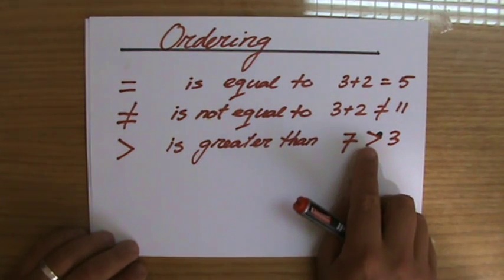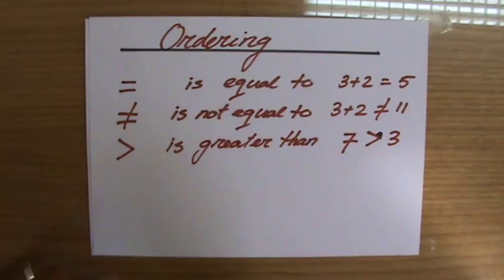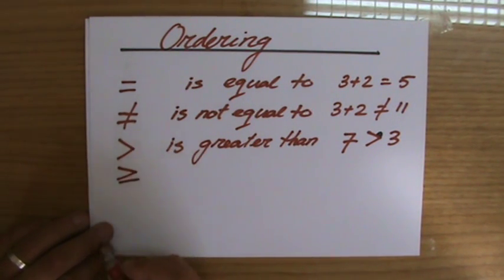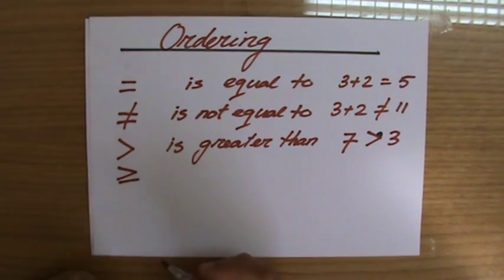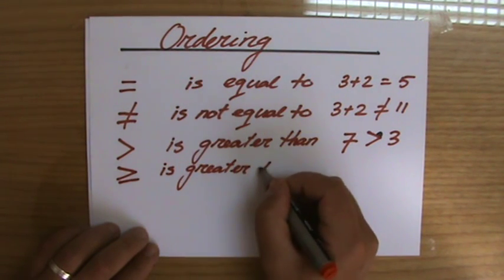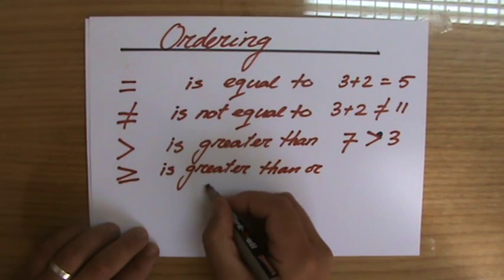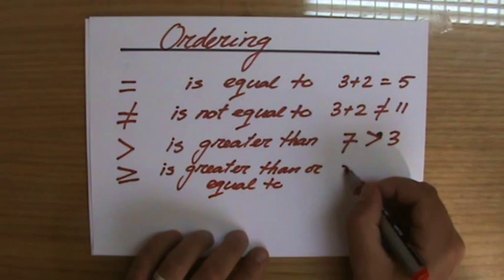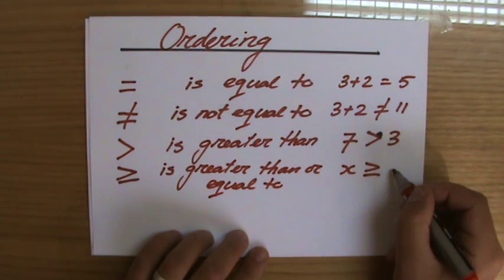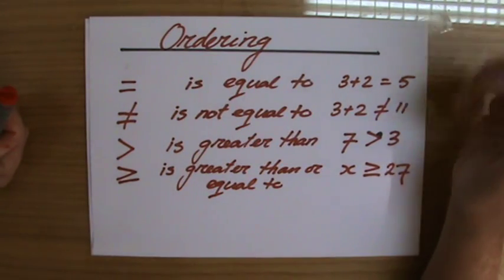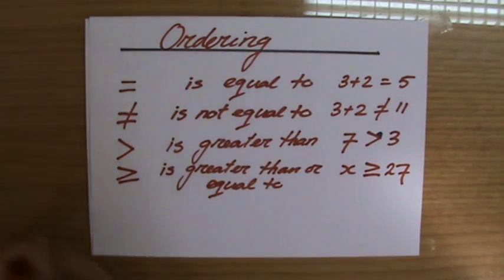And we can also have this sign which means is greater than or equal to. So what could I use that? Well for instance, x is greater or equal to 27. That means that the value of that number is either 27 or more, but 27 is also still allowed.